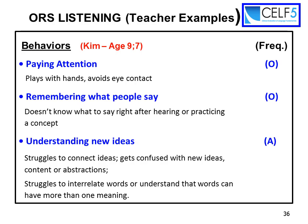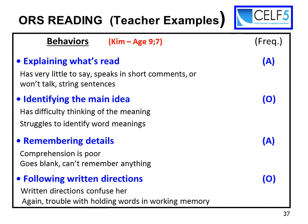Let's take a look at Kim's ORS. She had problems — often or always — with paying attention, remembering what people say, and understanding new ideas. She had problems explaining what was read: has very little to say, speaks in short comments, or won't talk. Always struggling to identify the main idea and remembering details, and following written directions. Under 'identifying the main idea,' she has difficulty thinking of the meaning and struggles to identify word meaning.